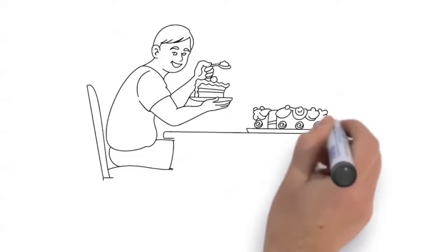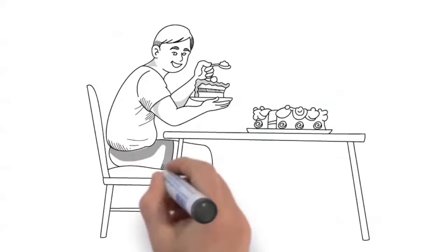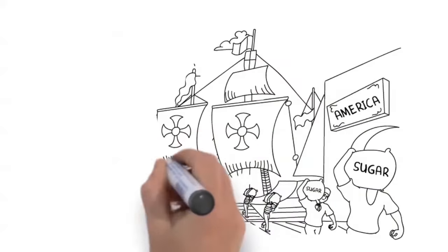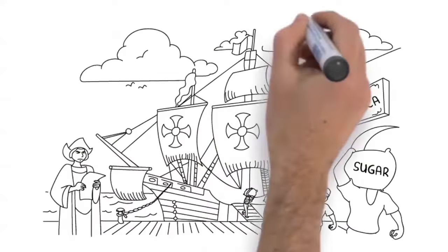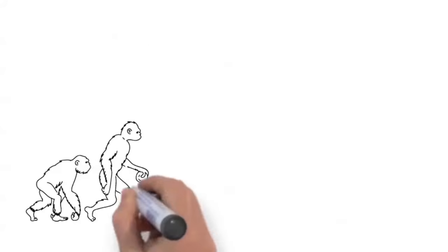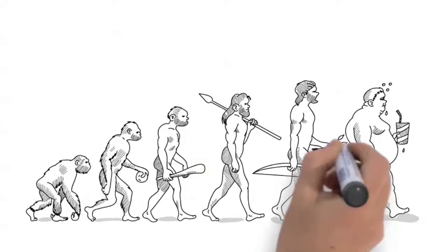Did you know that the average American consumes 150 pounds of sugar every year? The British used to call it white gold, and in 1493 Columbus brought sugar cane to the New World on his second voyage. The health of Americans has been suffering ever since.